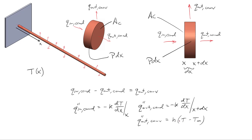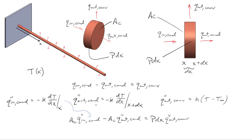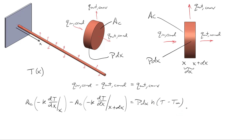The convective flux is the heat transfer coefficient multiplied by the temperature difference. To use these three expressions, we break the energy balance into fluxes multiplied by area. For conduction we use the cross-sectional area times the heat flux in, minus the cross-sectional area times the heat flux out due to conduction, and that equals the area for convection, which is P dx, times the convective flux. Now let's make the three substitutions for the flux entering, leaving due to conduction, and the energy leaving due to convection.